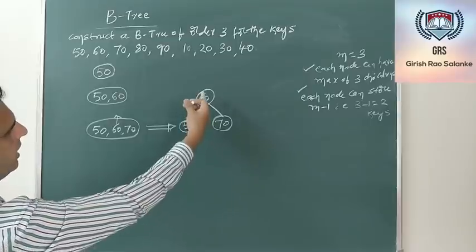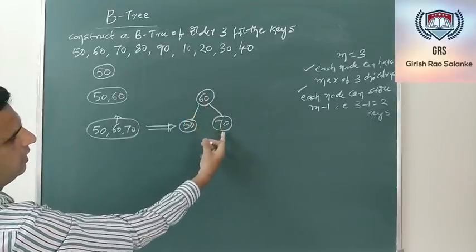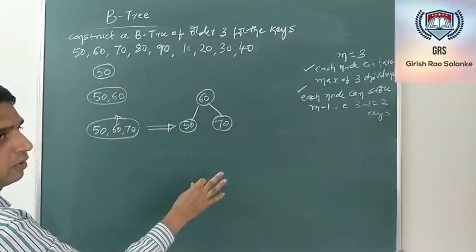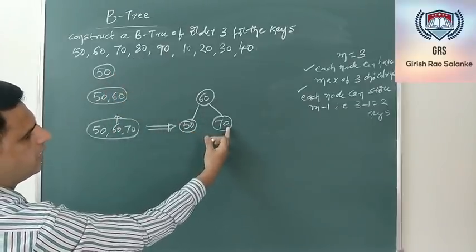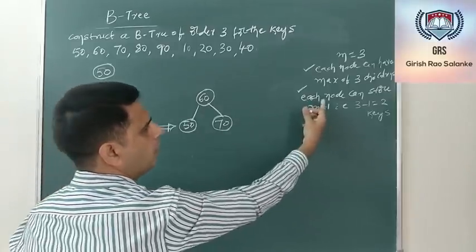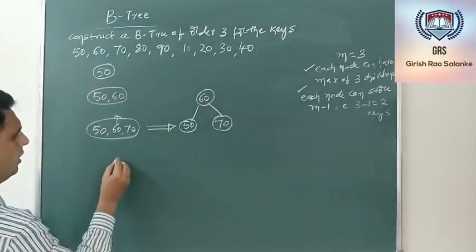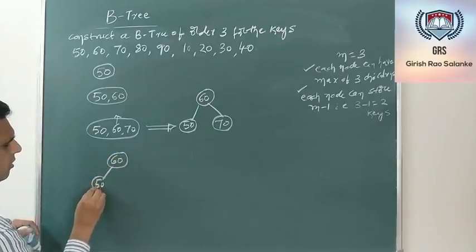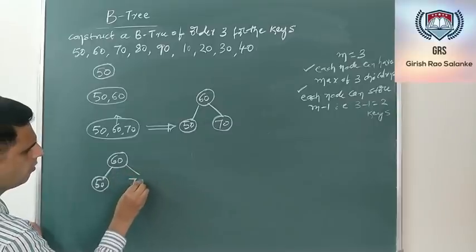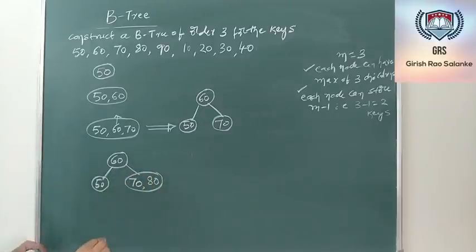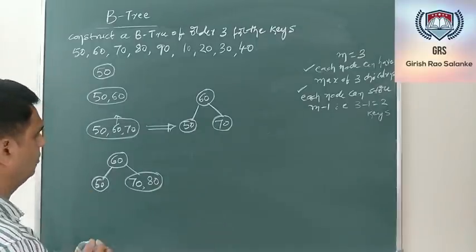Next insert 80. The position of 80 is to the right side of 70. A node can hold up to 2 keys, so inserting 80 gives [70, 80] which is allowed. The tree now has 60 as root, 50 as left child, and [70, 80] as right child.